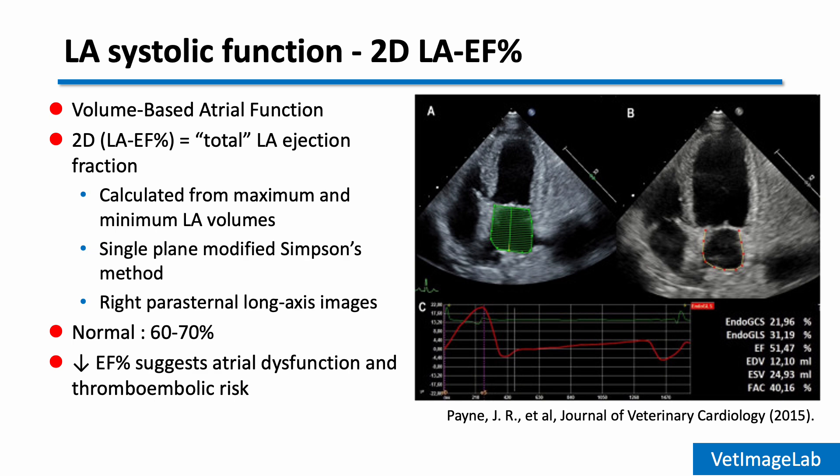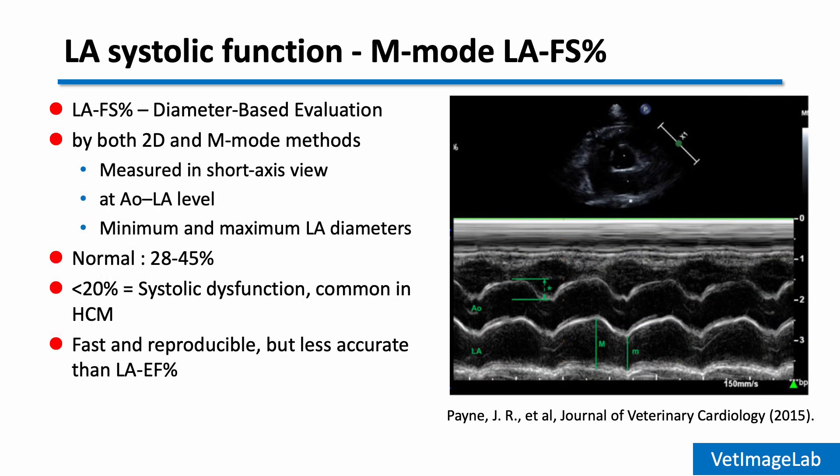The normal LA-EF in cats is around 60 to 70 percent. A reduced value may suggest impaired LA contractile function, which is often seen in cats with advanced HCM. The second method is LA fractional shortening, performed using M-mode in a short axis view at the level of the aortic valve and the left atrium.